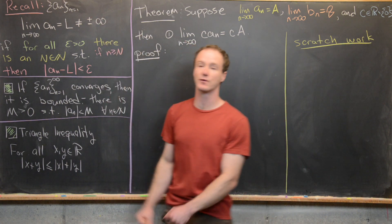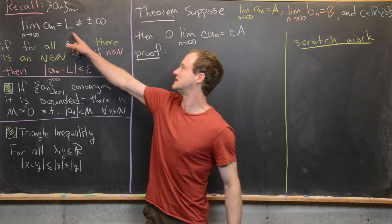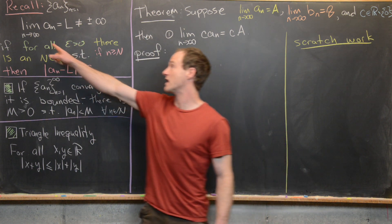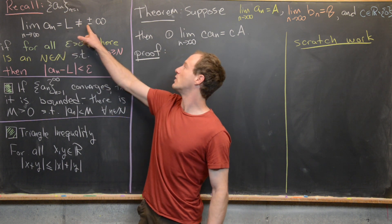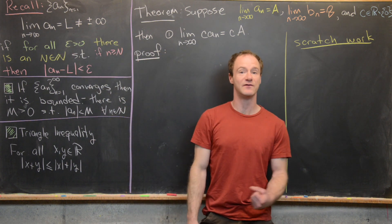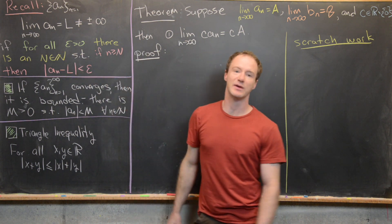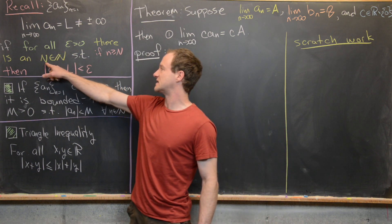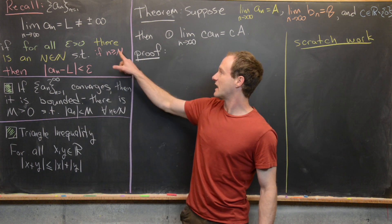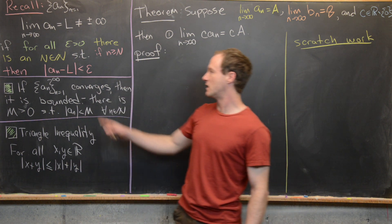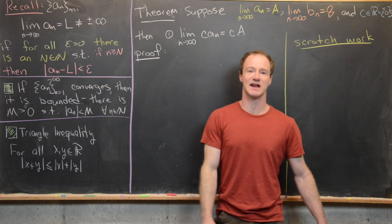Recall that if we have a sequence of real numbers a sub n, we say the limit of that sequence is l, and we write the limit as n goes to infinity of a sub n equals l — not considering infinite limits — if for all epsilon greater than zero, there exists a natural number N such that if little n is bigger than or equal to capital N, then |a sub n minus l| is less than epsilon.